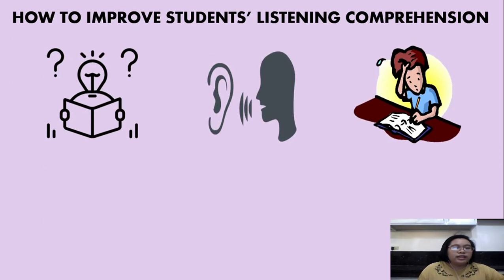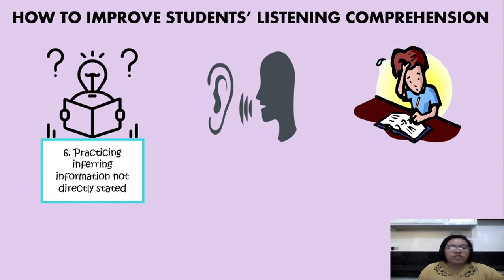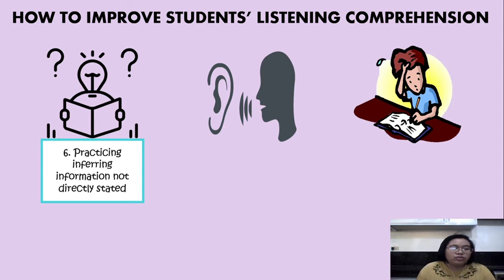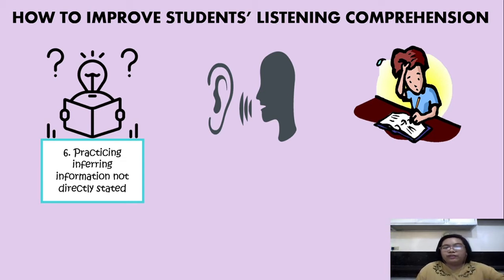Next is practicing inferring information that is not directly stated. It is important to teach students to find clues to get answers, then ask them to add clues to what they already know, or explain that there can be more than one answer in a specific scenario. Ask them to take a guess about things that have been stated in the message or recorded conversation, and be able to support their inferences from what they have heard.